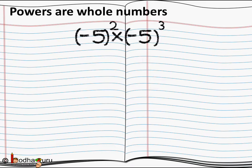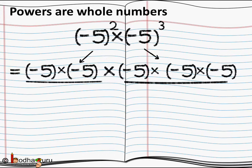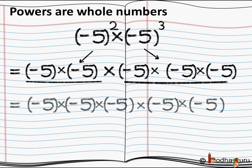We already know how to multiply numbers when the powers are whole numbers. Here the bases are the same — they are negative numbers, but the powers are whole numbers: two and three. So what is minus five to the power two? It is minus five squared, written as minus five multiplied by minus five. And minus five to the power three, or minus five cubed, is minus five multiplied by minus five multiplied by minus five. So we see minus five is multiplied five times in total, giving us minus five to the power five.